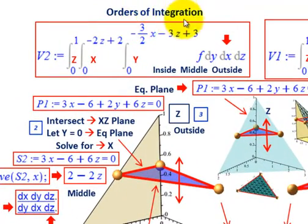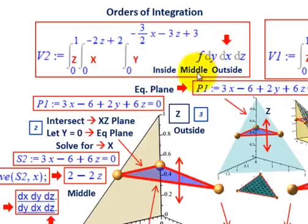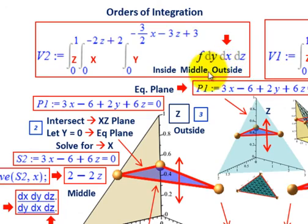Now we'll set up our integral. We're going to be looking at two different orders of integration. We're going to start with the first case: DY, DX, DZ. DY represents our inside integral, DX represents the middle integral, and DZ is our outside integral. We're going to work from the inside to the outside.